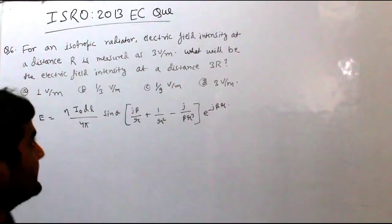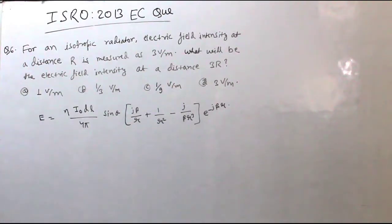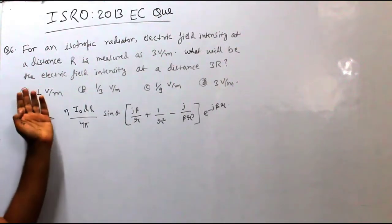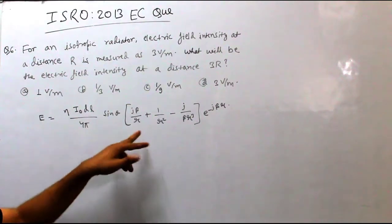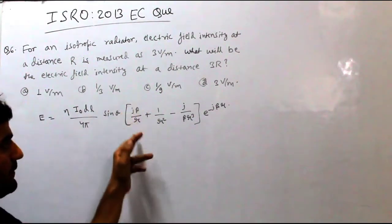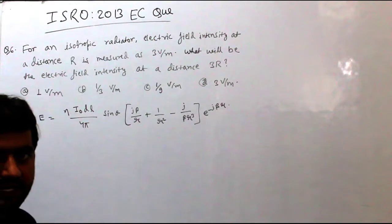Basically, for an isotropic radiator or isotropic antenna, at any particular point, the electric field intensity follows a formula. In this case, the e to the j beta by R, meaning 1 by R, which is the factor which is dominating.